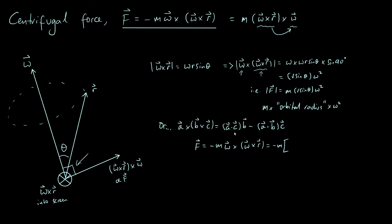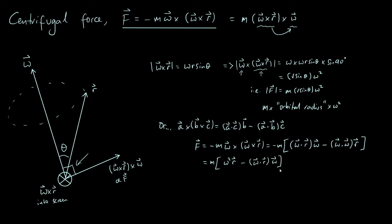Applying the identity: f is minus m times omega crossed with omega cross r. Dotting a with c gives omega dot r, in the b direction which is omega. The second term involves a dot b, which is omega dotted with itself — the magnitude of omega squared — times the r vector. Getting rid of the minus sign and reordering gives m times omega squared times r, minus omega dot r times omega.